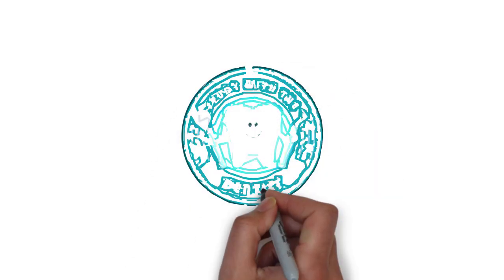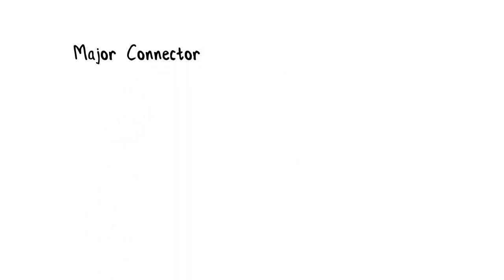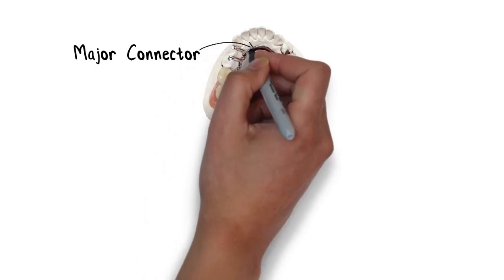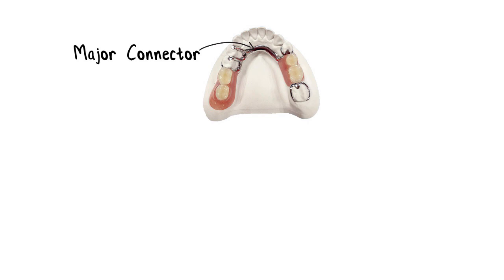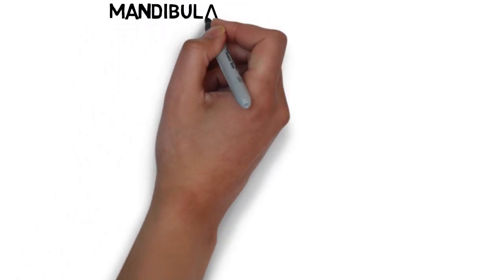Major connectors are that part of the prosthesis that helps to unite the two sides of the denture. All parts of the prosthesis are either directly or indirectly attached to the major connector, and in order to provide adequate support to all the other parts, the major connector needs to be sufficiently strong and rigid.